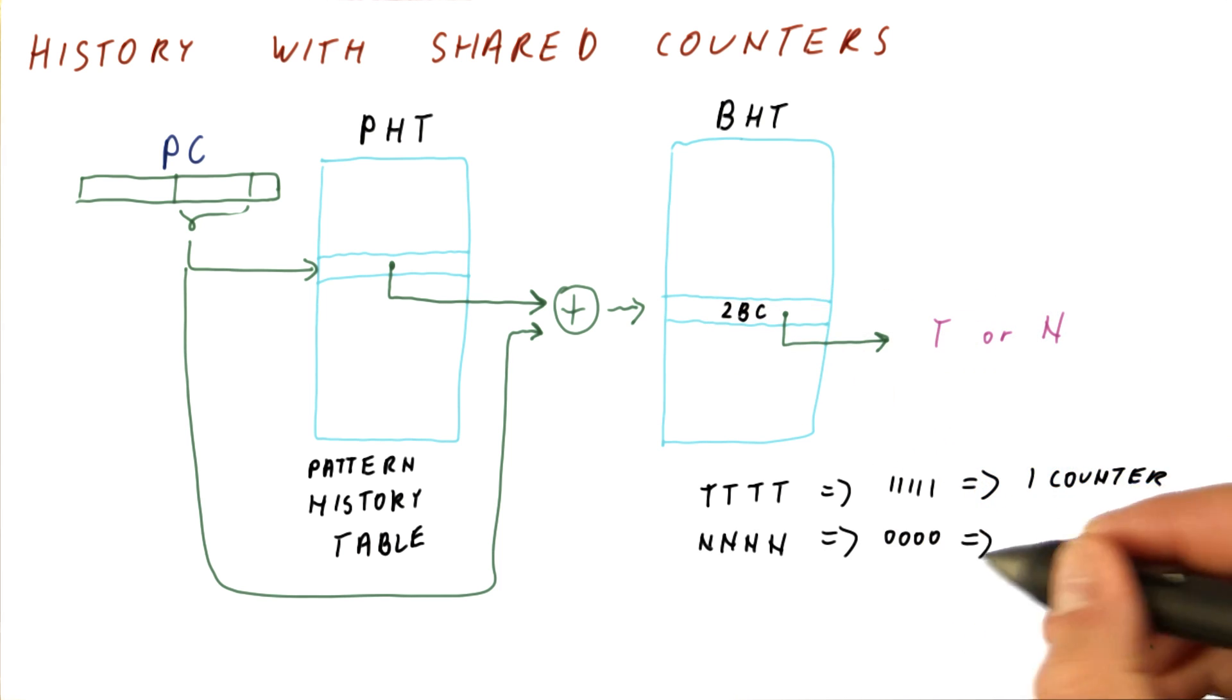If we have a branch that is never taken, we can do the same reasoning and end up using a single counter.